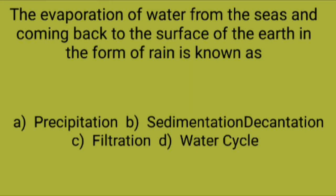Evaporation of water from the seas and coming back to the surface of the earth in the form of rain is known as A. Precipitation B. Sedimentation D. Decantation C. Filtration D. Water cycle